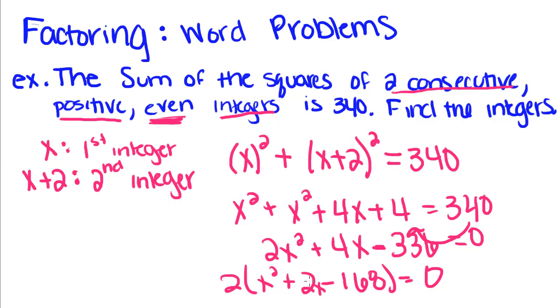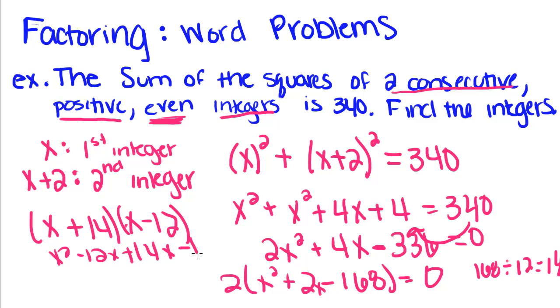And I found out that 168 divided by 12 is equal to 14. So if I make this x plus 14 times x minus 12, then they'll add to give me a positive 2 and multiply to give me a negative 168.